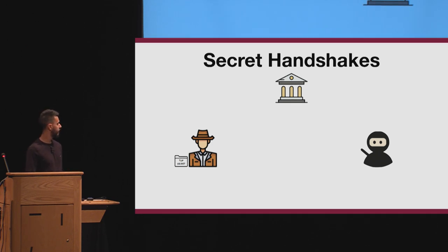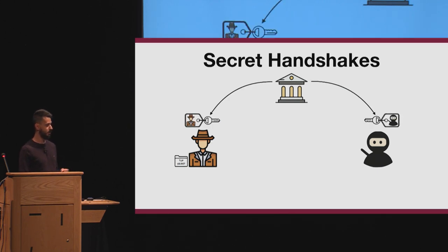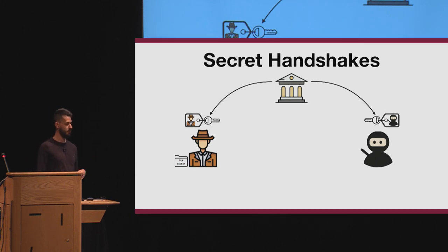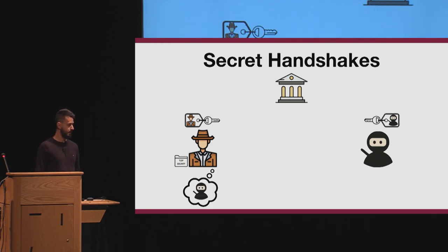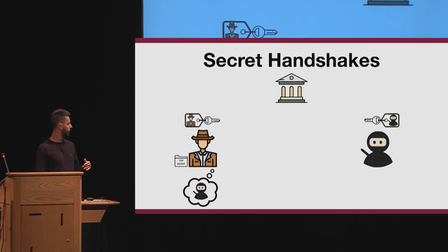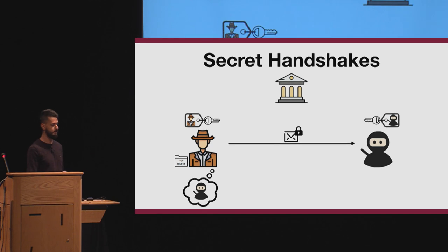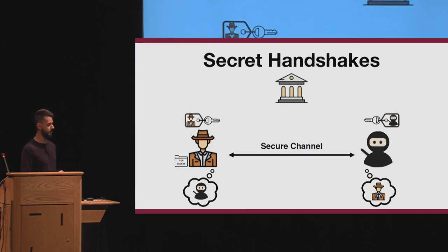There is an authority responsible for generating keys for the parties, and the keys contain the attributes of the corresponding party — for example, the detective has a key for the detective. Then the protocol can start: the detective chooses a policy on the fly, which is a description that the attributes of the other party must satisfy. The party does some cryptographic operation using the key and the policy, and sends a message to the other party, who does the same and sends back. The property is that they share a secure channel if both policies are satisfied — so there is a mutual match.